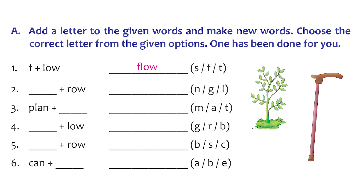The second word is 'row', like 'row row row your boat'. Now let's try adding the letter G. When we add G to it, we get a new word called 'grow'. Plants grow.